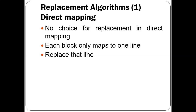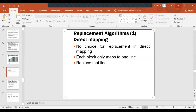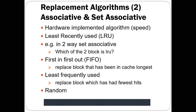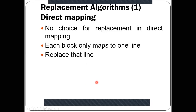First, we'll discuss replacement with respect to direct mapping. There is no choice for replacement in direct mapping. According to the direct mapping logic, for any block that has to be mapped into a cache line, there will be only one cache line where you can map that block. So there is no choice for replacement algorithms — if you want to replace, you have only one line from the cache that you can replace. Each block only maps to one line, so we have to replace that line only.